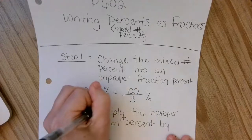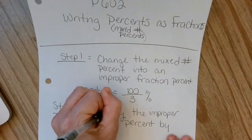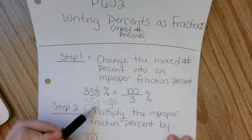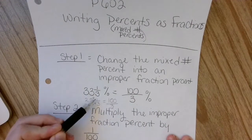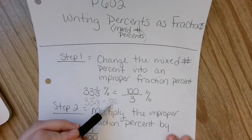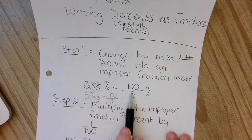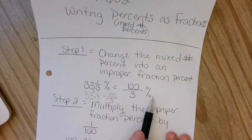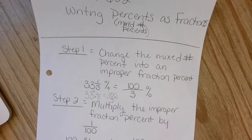And that's what is going to give us the 100 over 3 because 33 times 3 is 99 plus 1 is 100. And then your denominator stays the same. So that's how I got 100 third percent, which definitely looks weird.